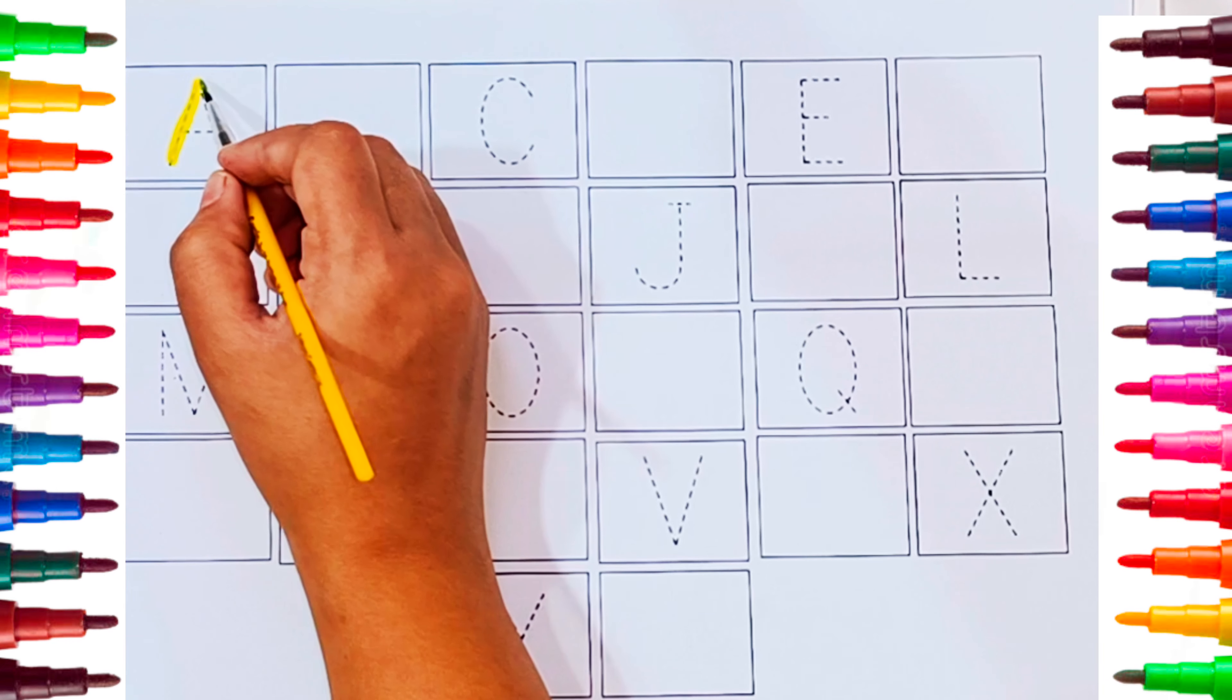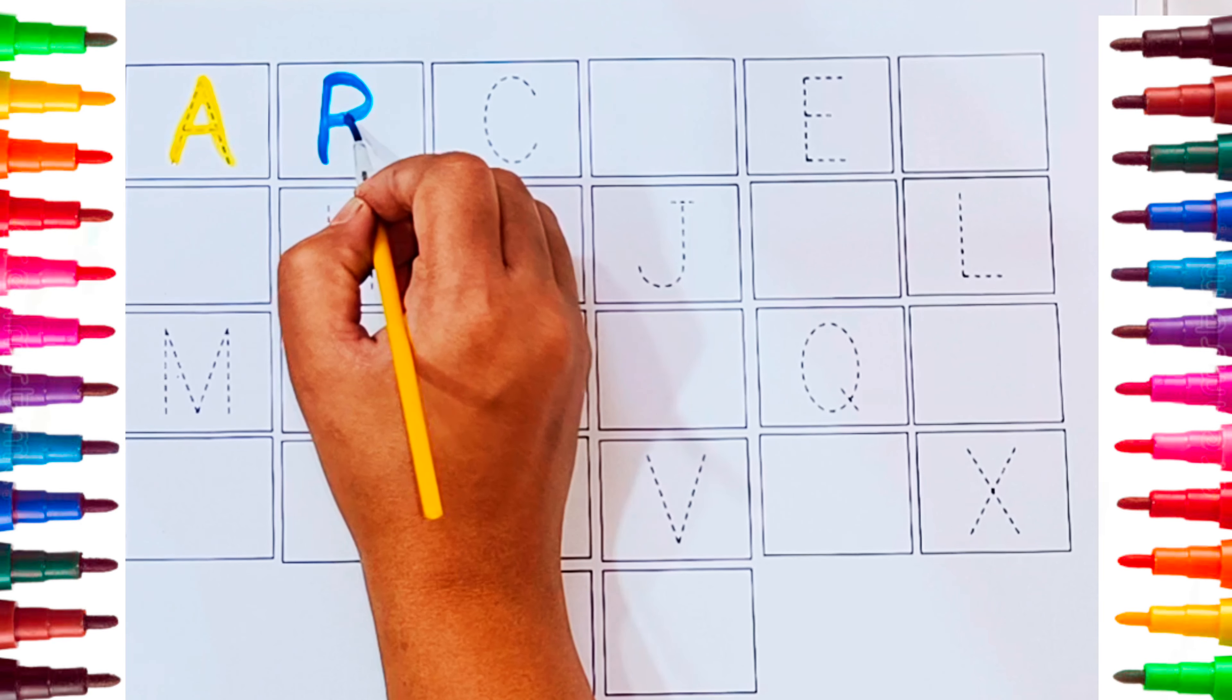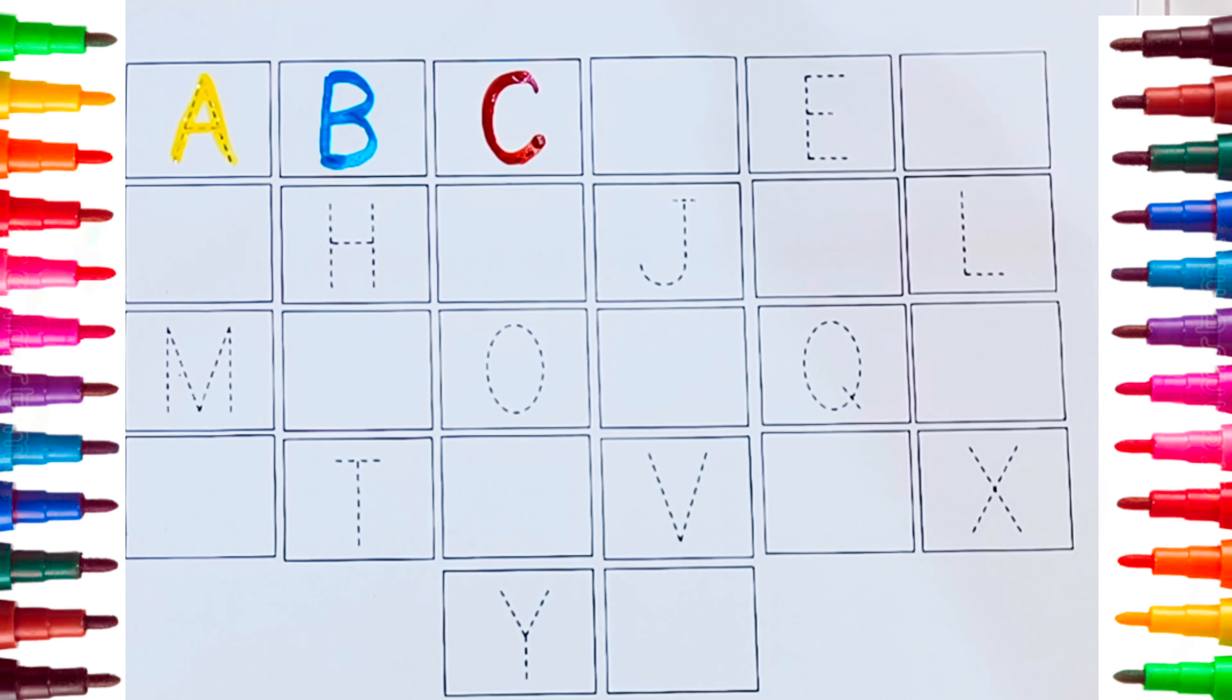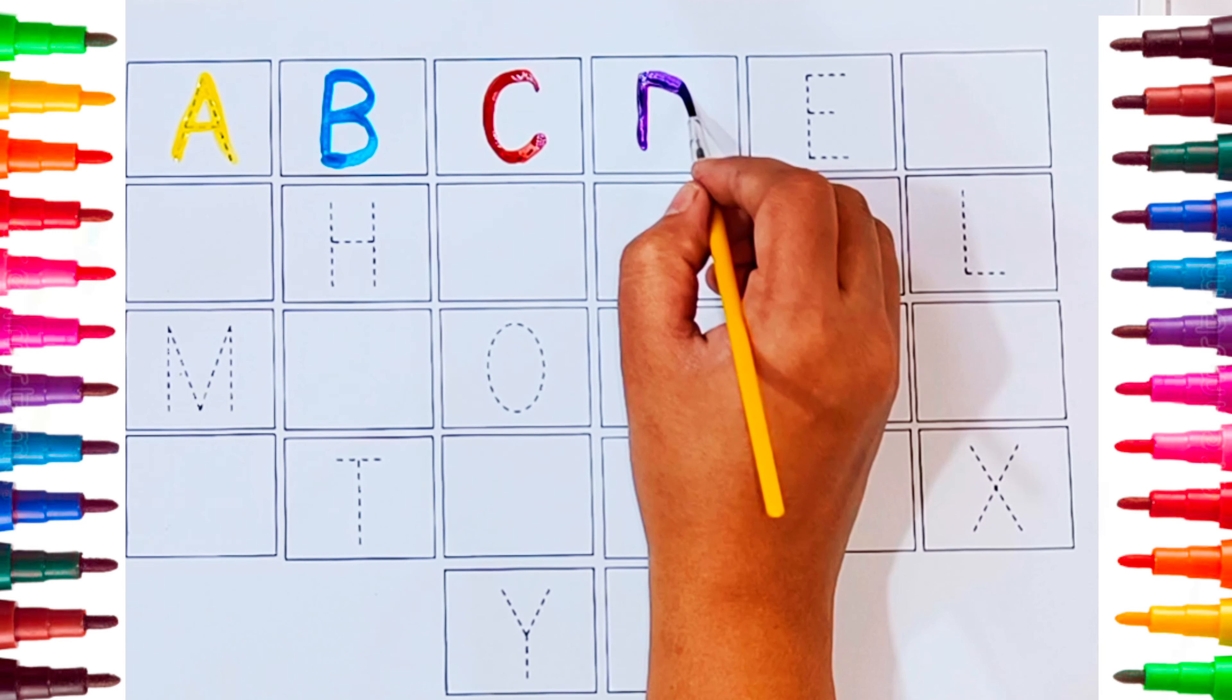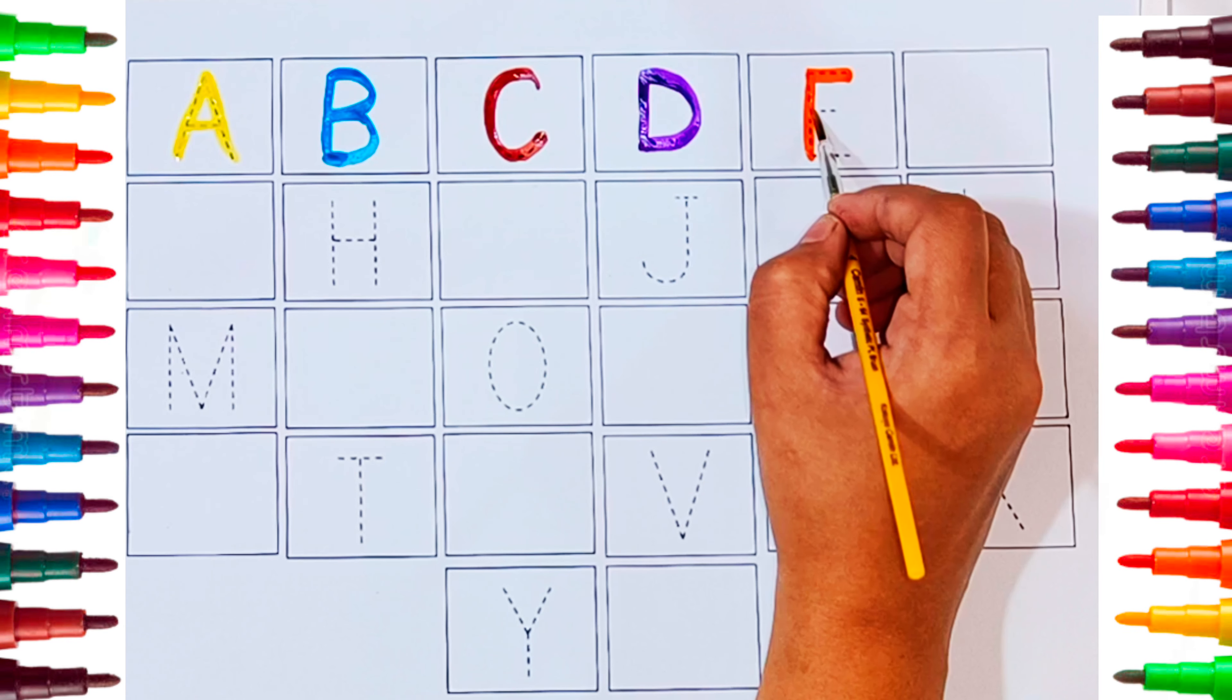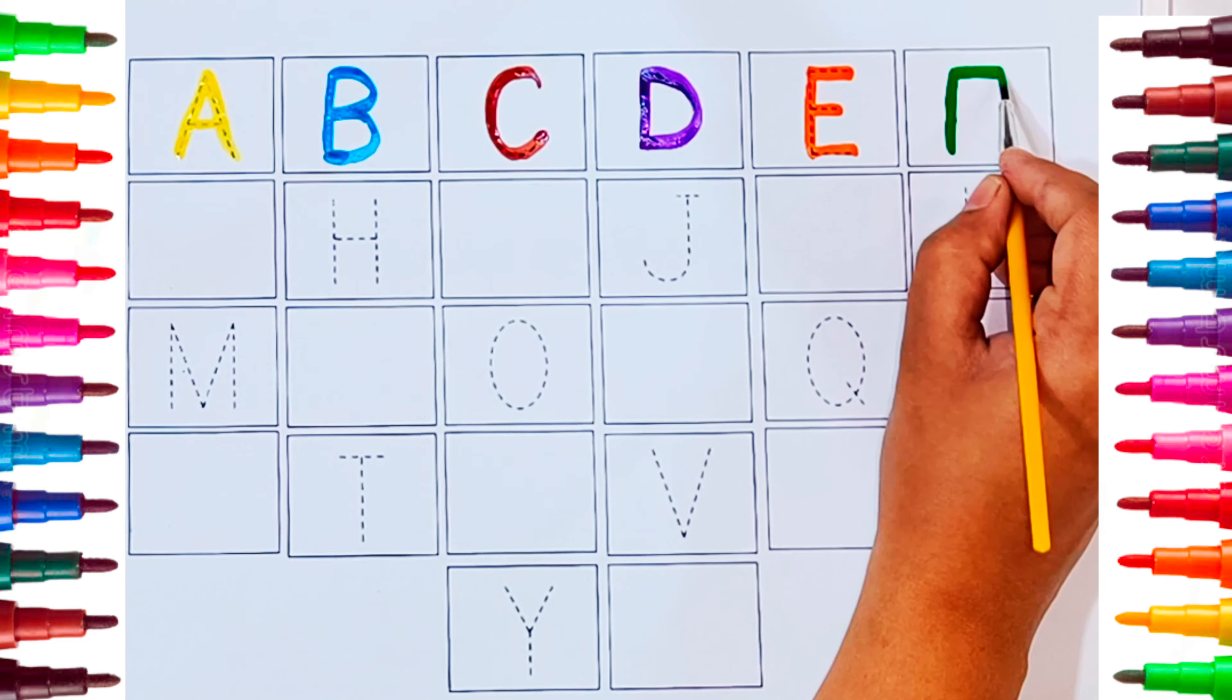Yellow color, A, A is for Apple. Blue color, B, B for Ball. Brown color, C, C for Cat. Violet color, D, D for Dog. Orange color, E, E for Elephant. Green color, F, F for Fish.